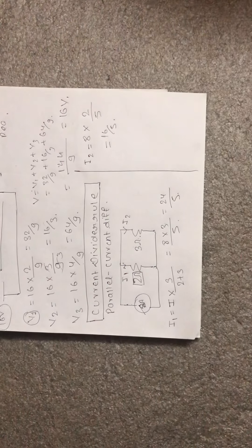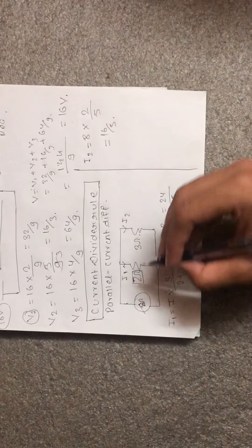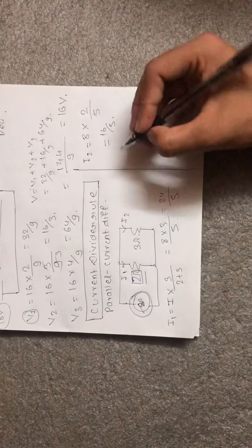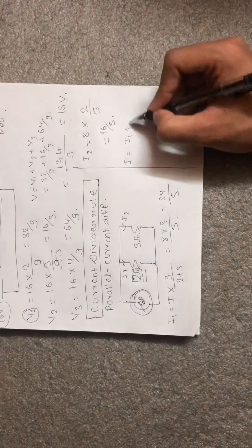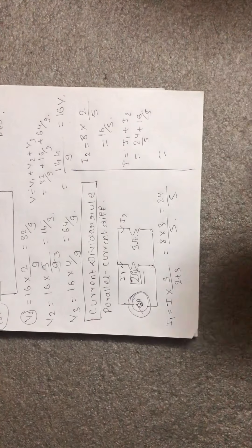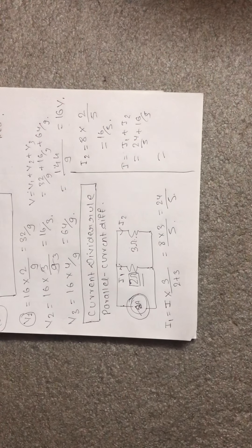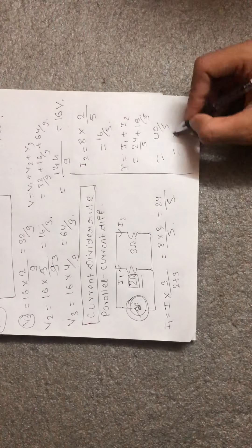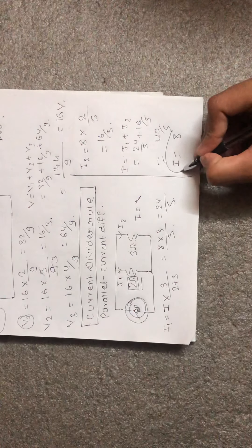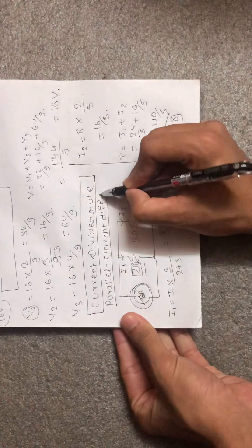To verify the current divider rule result: total current I should equal I1 + I2. So I = 24/5 + 16/5 = 40/5 = 8. This confirms I equals 8 ampere, which matches our given total current. That is how the current divider rule and the voltage divider rule work in parallel and series circuits respectively.